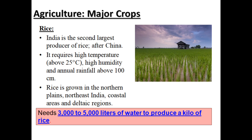Rice cultivation is done in northern plains, northeast, coastal areas, and deltaic regions — basically wherever there is flooding, high humidity, like in the south and northeast. On the negative side, rice is not good for the environment because bacteria associated with rice cultivation produce methane gas. Second, it consumes much more water than any other crop — 3,000 to 5,000 liters of water is used to produce one kilogram of rice.